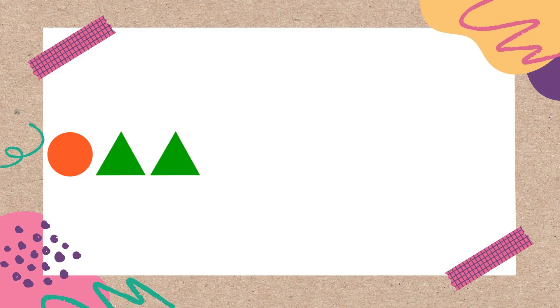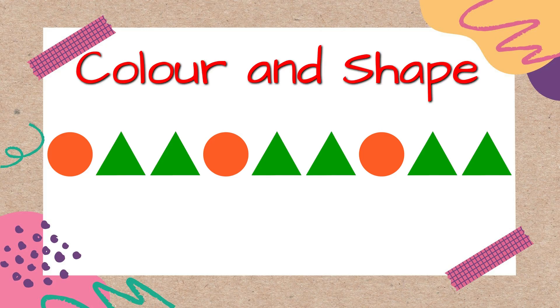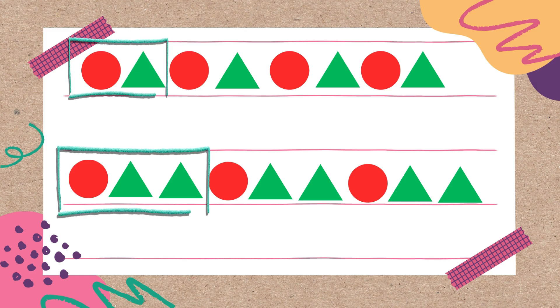Now observe this pattern: red circle, green triangle, green triangle, red circle, green triangle, green triangle. Did you observe the same attributes are changing here — that is color and shape? Yes, but what is the difference in these two patterns? The core pattern is different. So by changing the core pattern, you can create different patterns with the same changing attributes.